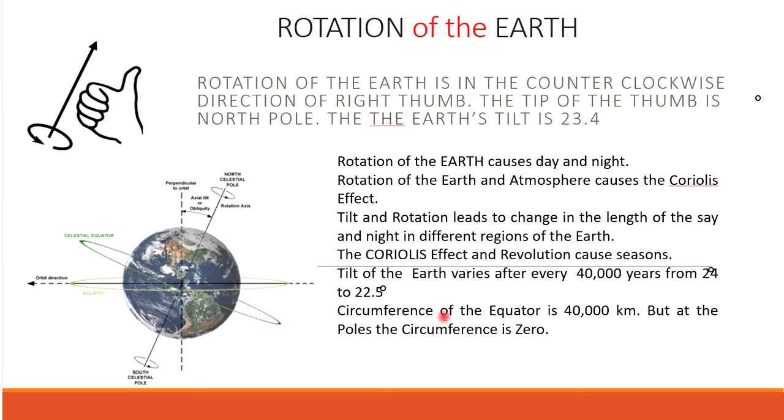The circumference of the equator is 40,000 km, but at the poles the circumference is zero.